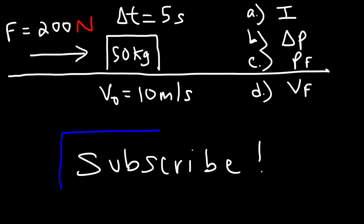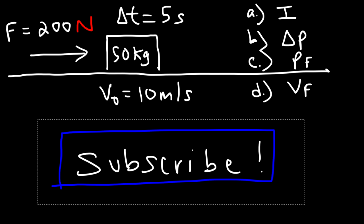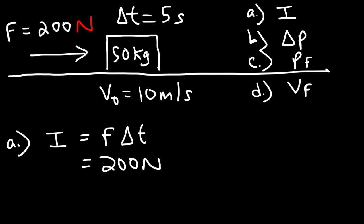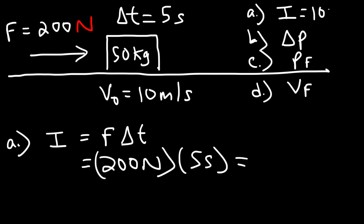How do we calculate the impulse acting on this object? The impulse is simply the force multiplied by the time the force is active. So it's 200 newtons multiplied by 5 seconds, which gives us 1000 newton-seconds.